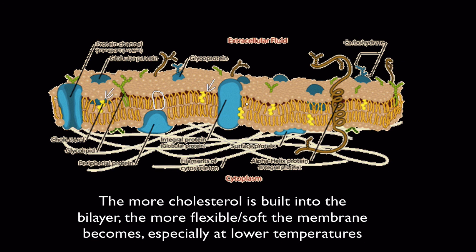But right here, these little yellow things are the cholesterol molecules, and the more cholesterol molecules you incorporate into the bilayer, the softer and more flexible the cell membrane becomes. So this is one of the ways that a cell can control the flexibility of its cell membrane, especially at lower temperatures.